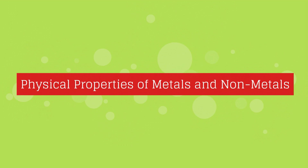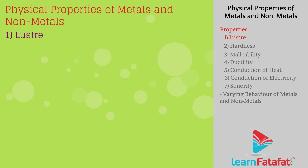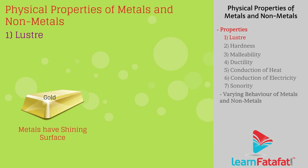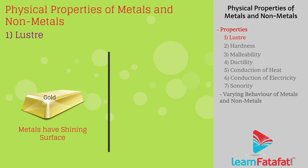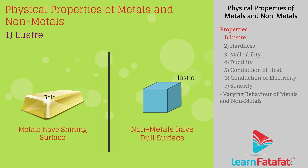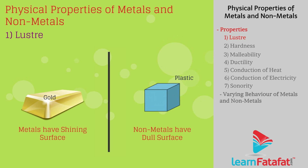Physical properties of metals and non-metals. Lustre: Metals in their pure state have a shining surface. For example, gold and copper. However, non-metals do not have such property.